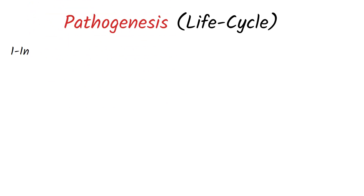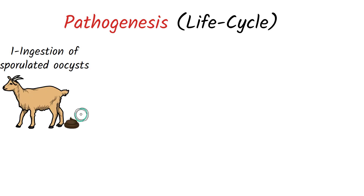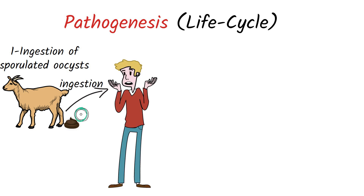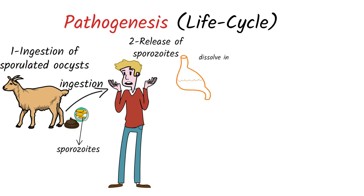The life cycle of cryptosporidium begins with the ingestion of sporulated oocysts, which are found in the feces of infected hosts. These oocysts contain 4 sporocytes. Upon ingestion, the oocysts are dissolved in the stomach and the sporocytes are released.